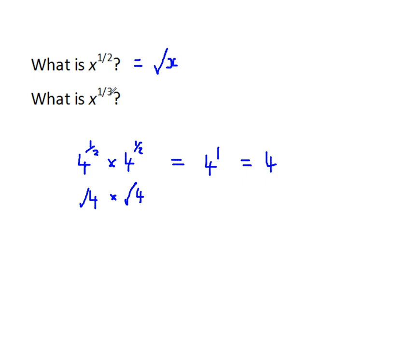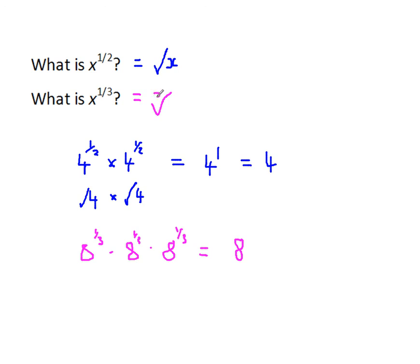What about x to the power of a third? It must be the number which when multiplied by itself and then again by itself gives x. For example: 8 to the power of a third, times 8 to the power of a third, times 8 to the power of a third — adding the indices gives a third plus a third plus a third equals 1, so the result is 8 to the power 1, which is 8. The number that cubed gives 8 is called the cube root of 8, so 8 to the power of a third is the cube root of 8, which is 2. In general, x to the power of a third is the cube root of x.